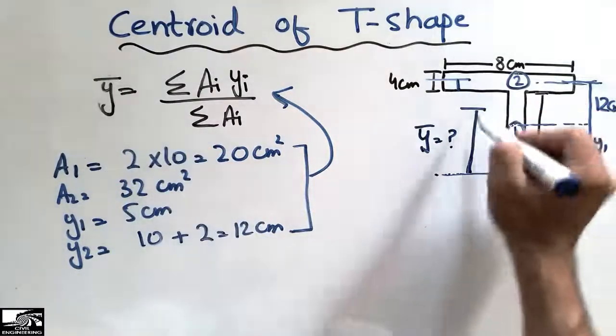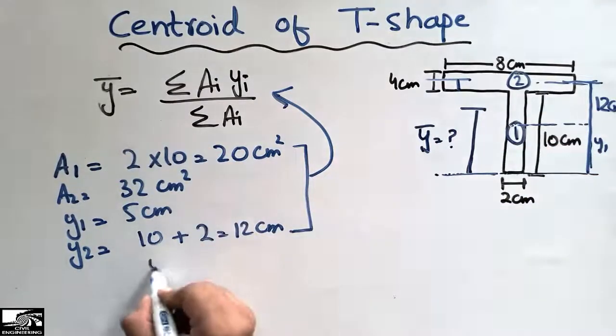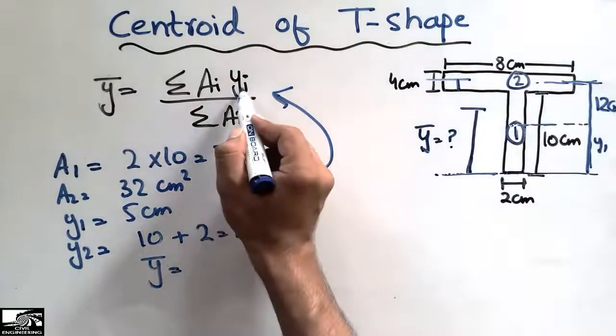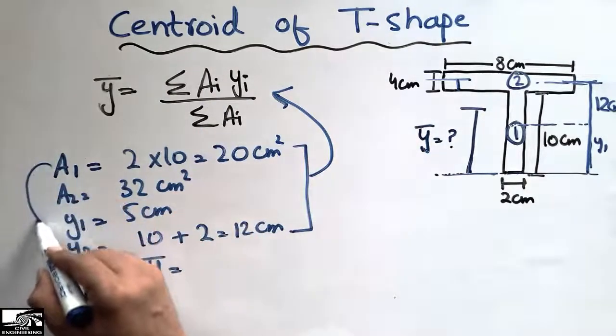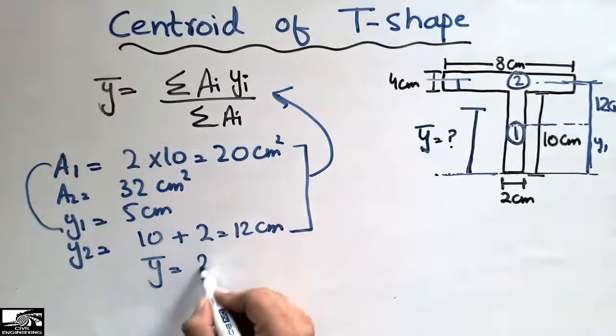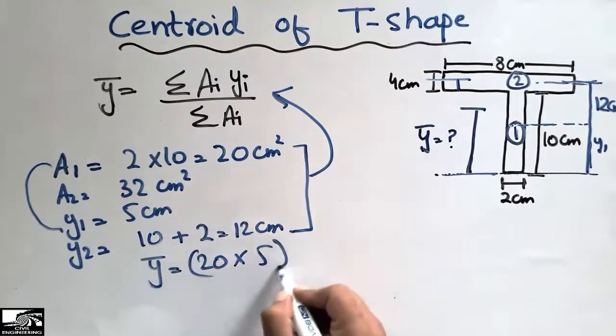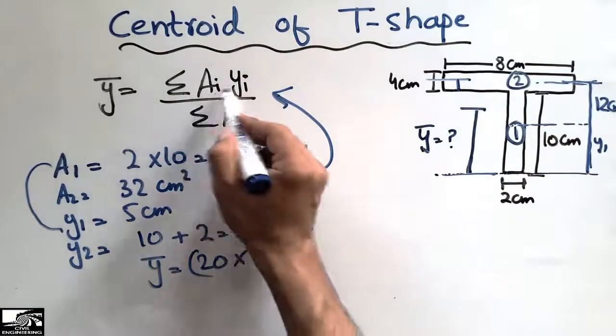The centroid Y bar is equal to the summation of areas times Y bar. So A1 into Y1, A1 is 20 and Y1 is 5, and adding these because it's a summation sign, A2 into Y2.